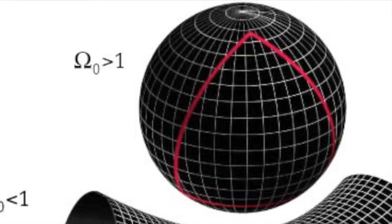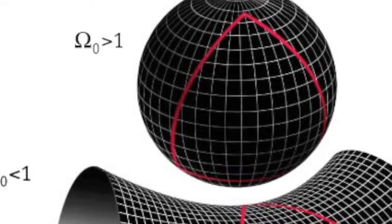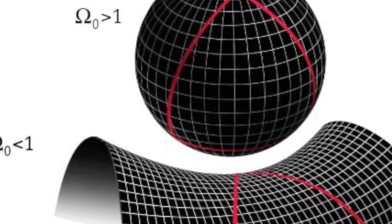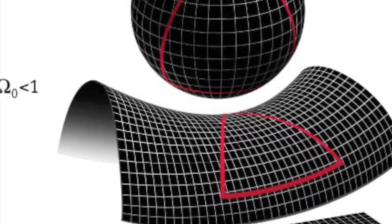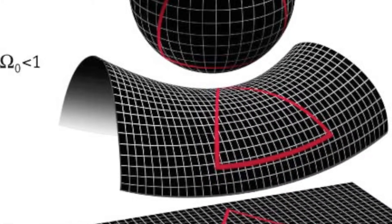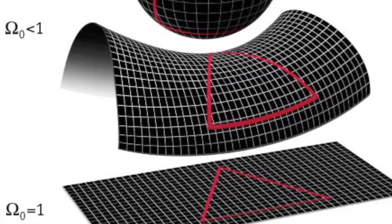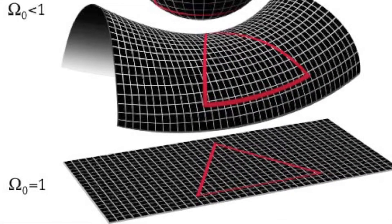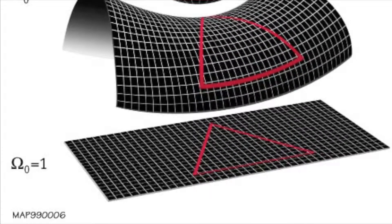According to the general theory of relativity, the universe can take on one of three basic shapes: open, closed, or flat. If there's more than a certain amount of matter and energy in the universe, then it takes on a closed shape. If there's less, it takes on an open shape. But if there's just the right amount, it takes on a flat shape. As it turns out, when you include all that dark stuff out there, our universe has just the right amount of matter and energy to be flat.